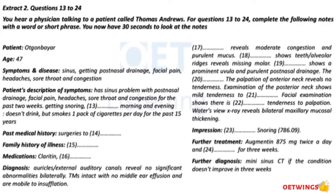Your aurals and external auditory canals reveal no significant abnormalities bilaterally. TMs intact with no middle ear effusion and are mobile to insufflation. Your intranasal exam reveals moderate congestion and purulent mucus. Your oropharynx examination shows teeth. Alveolar ridges reveal missing molar. Examination of the posterior pharynx shows a prominent uvula and prominent post-nasal drainage. The palatine tonsils are 2 plus and cryptic.